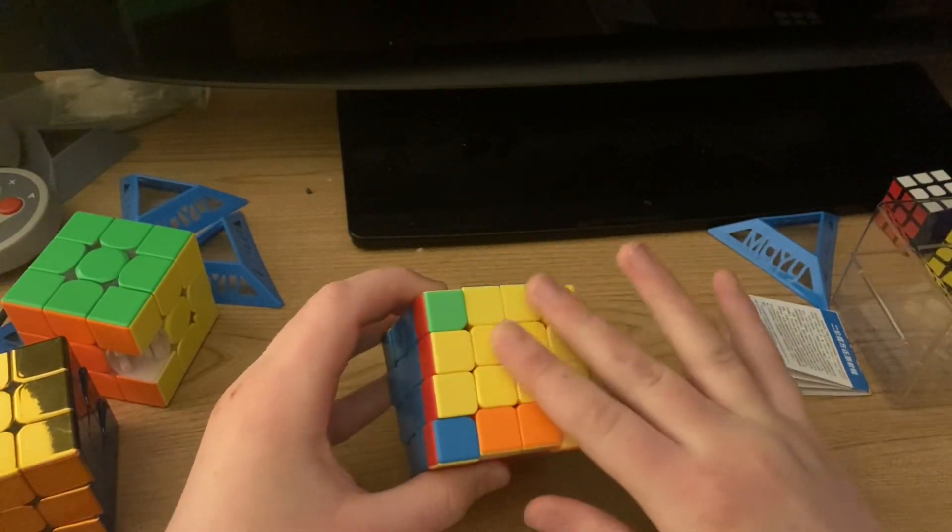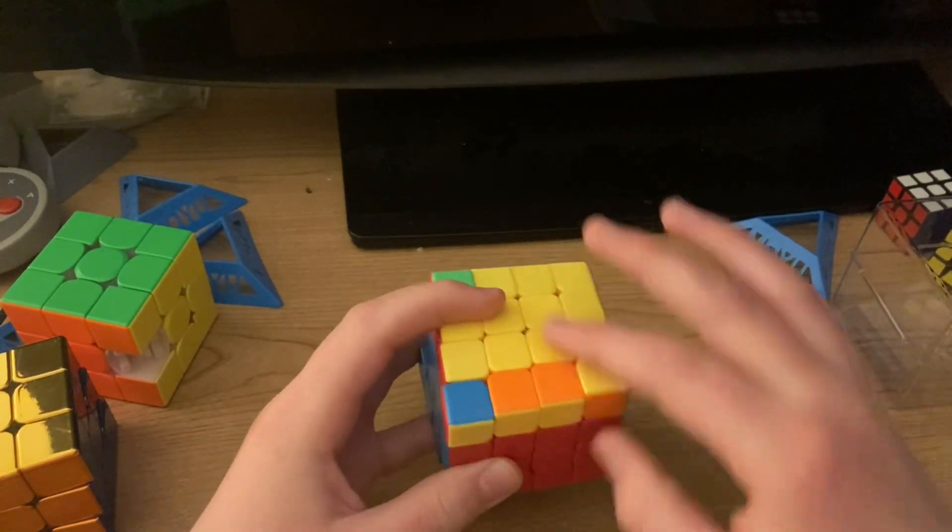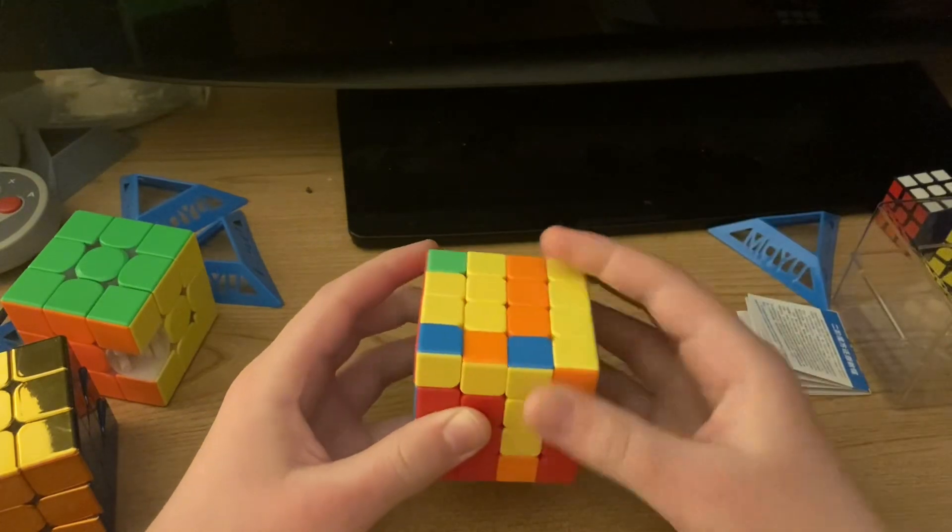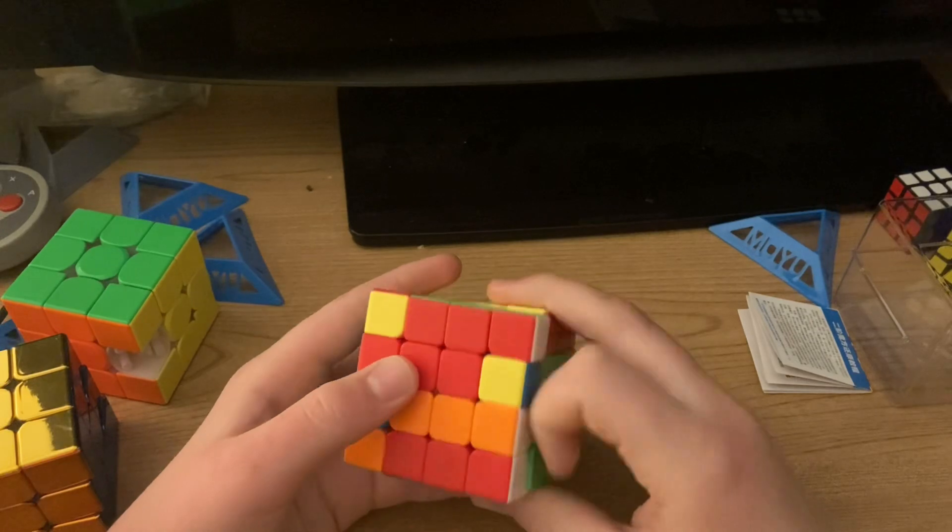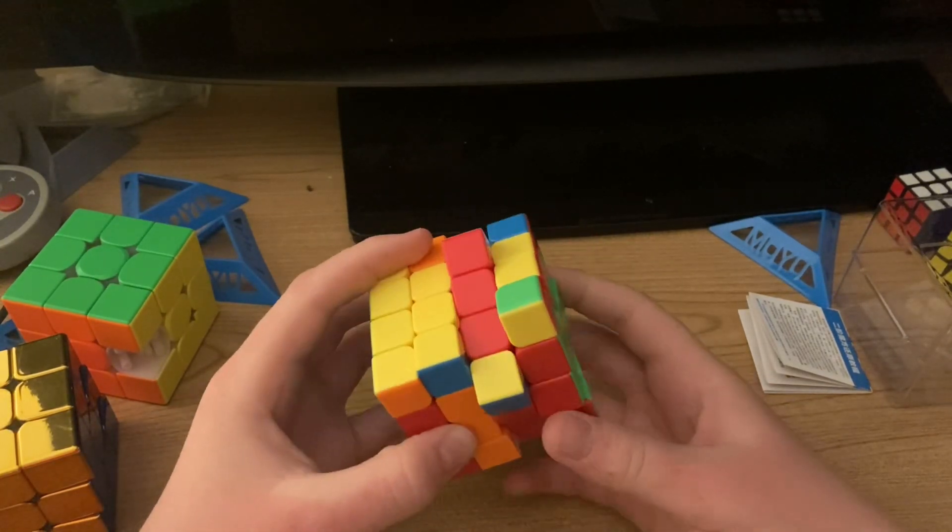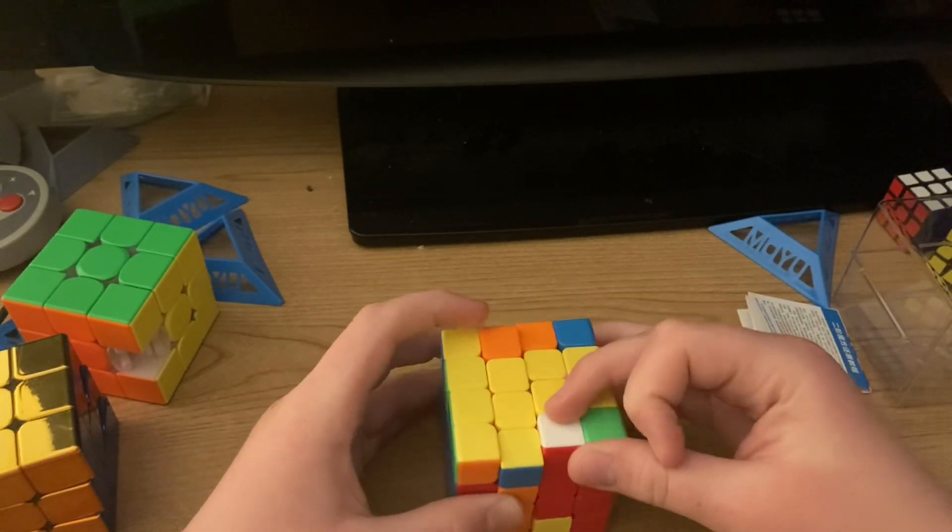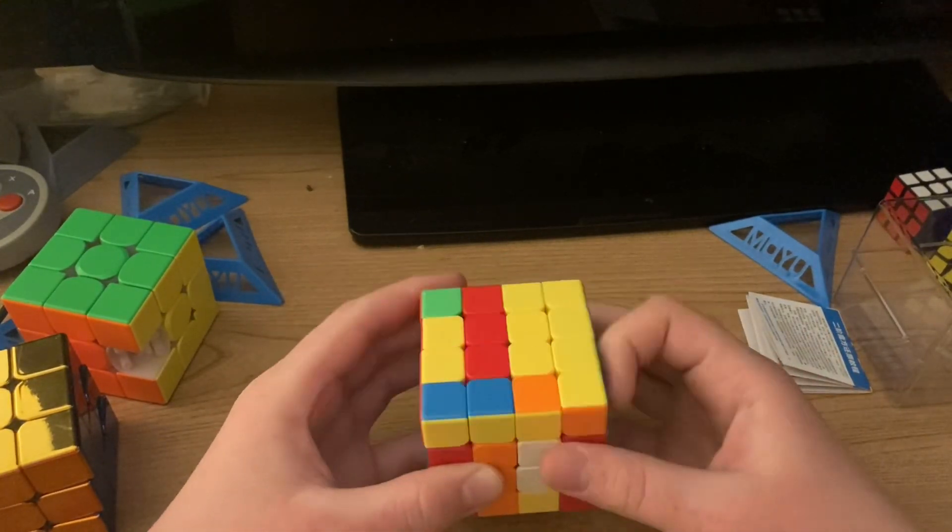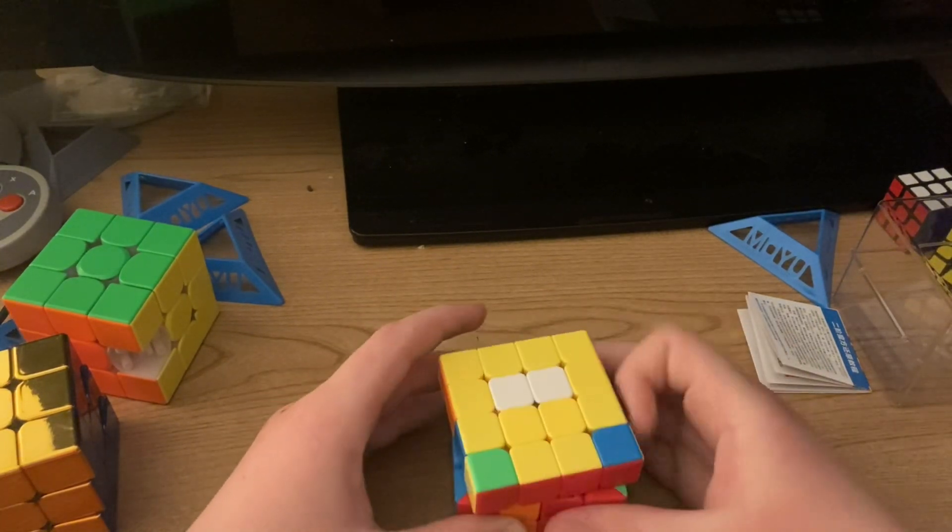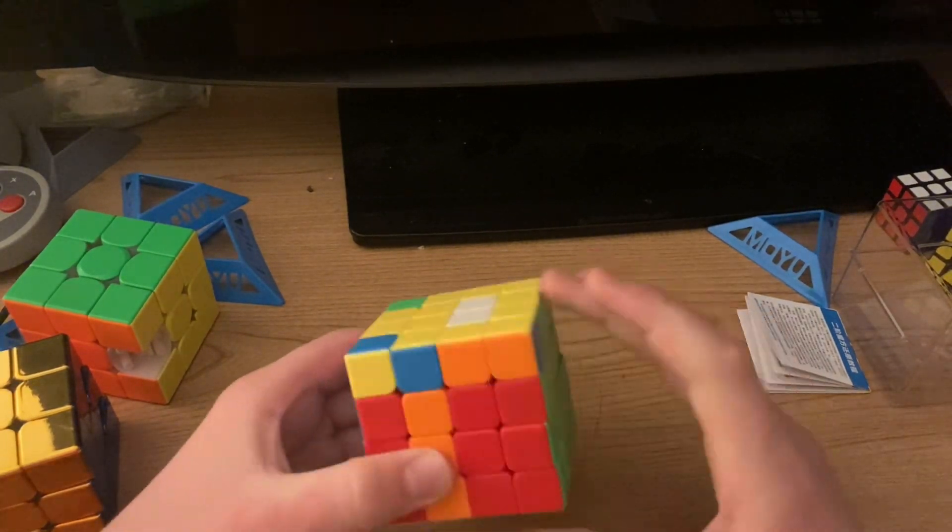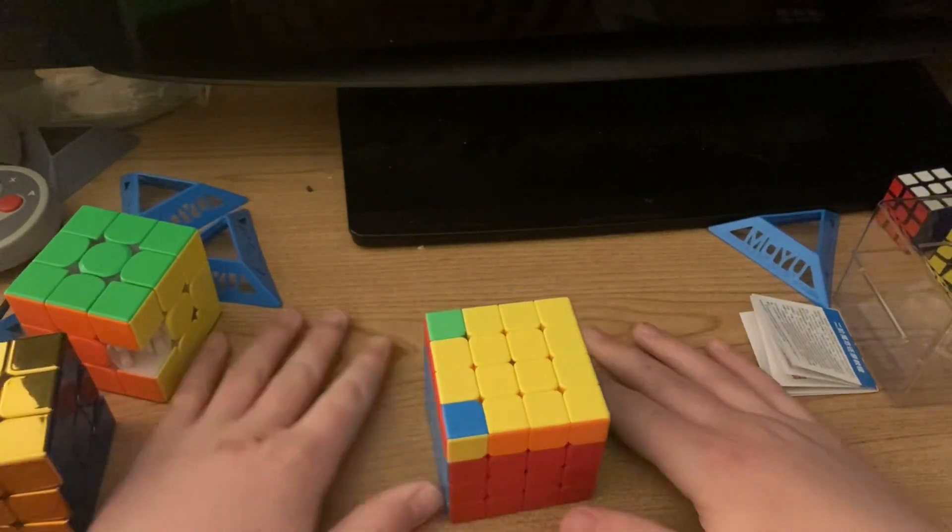I have parity. If you have this or there's like one bar like this, it's not solvable with the usual 3x3 algorithms, so you're going to have to do this. There we go.